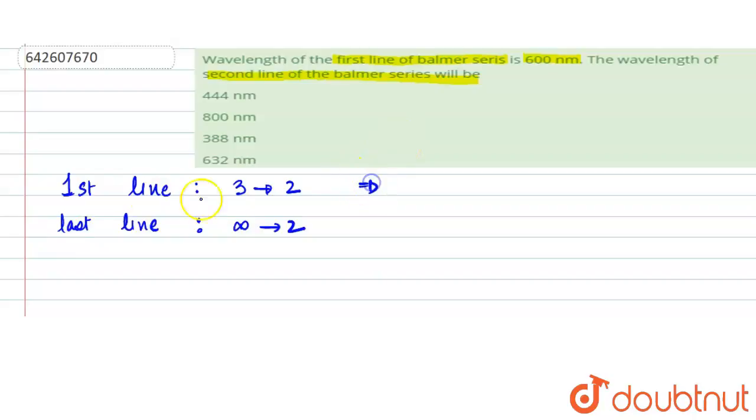So that means the second line of the Balmer series will correspond to transition of electron from n equals 4 to n equals 2.